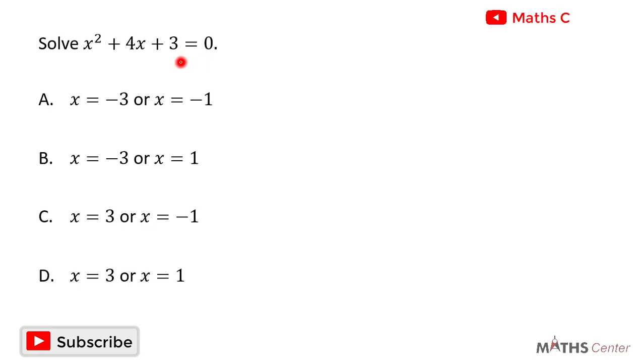Solve x squared plus 4x plus 3 equals zero. This is a multiple choice question, so we will solve the question and then pick the correct option.